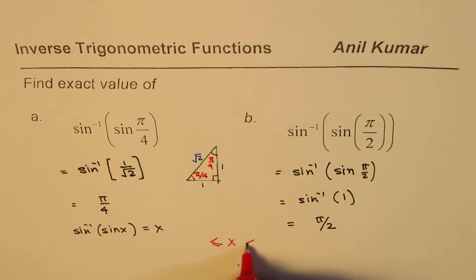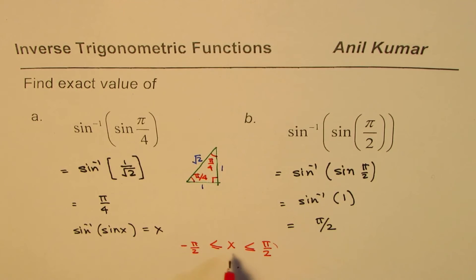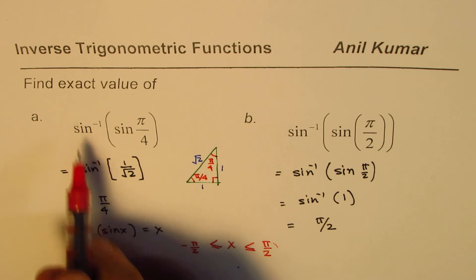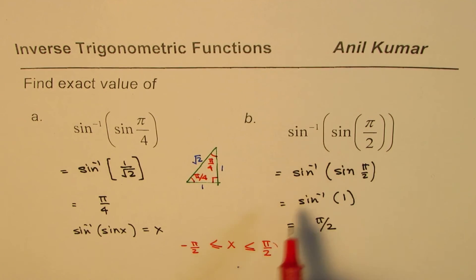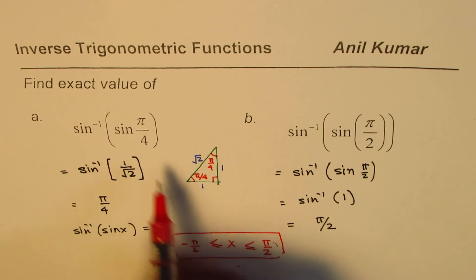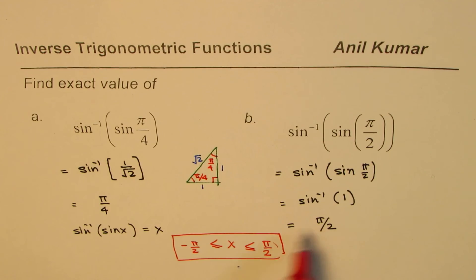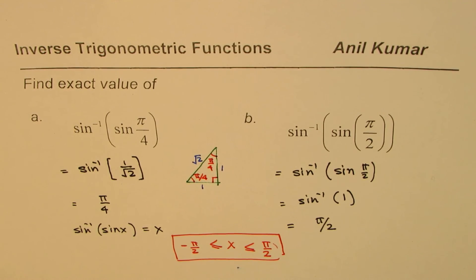Since inverse of sine function is basically defined in this interval, that is the domain for the inverse. So it is only true in this particular domain. Both these angles were within this interval and therefore we got that result. Let's take a few more examples to understand this concept.